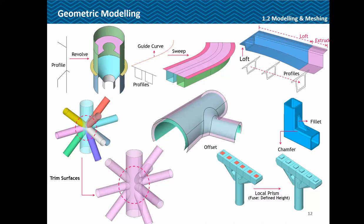Another generation feature is revolve — for a pipe or silo construction, you can generate a 1D profile which you revolve to obtain your 3D model. Similarly we have the sweep feature and the loft feature for changing profiles. Then basic trim operations, offset so any complex shape can be offset to generate the required thickness, chamfer, fillet, and the fuse option.